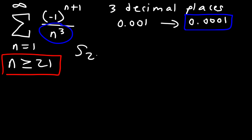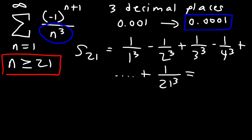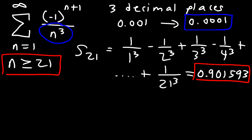Let's calculate the sum of the first 21 terms. When n is 1 the first term is positive — negative 1 squared is positive — so it's 1 over 1 cubed, minus 1 over 2 cubed, plus 1 over 3 cubed, minus 1 over 4 cubed, and so on. All even terms are negative and all odd terms are positive. The last term is the 21st, which is odd, so it's positive: plus 1 over 21 cubed. Plugging that in, you should get 0.901593. Rounded to three decimal places, S is approximately 0.902.